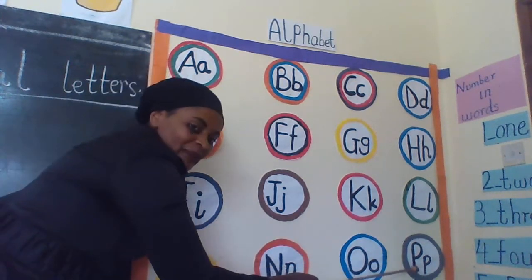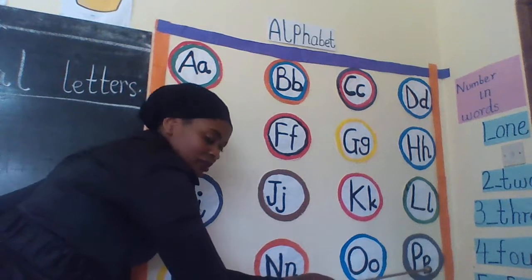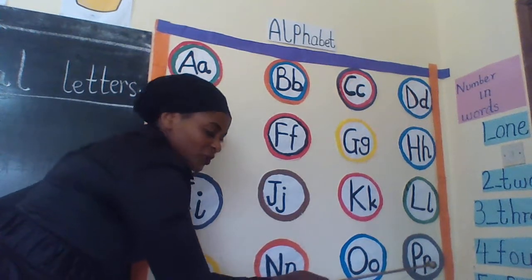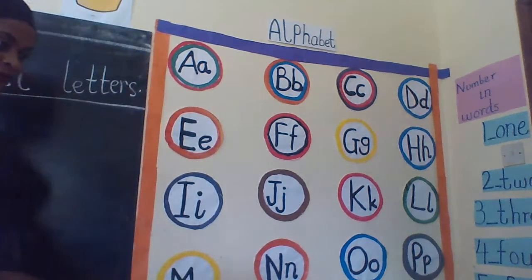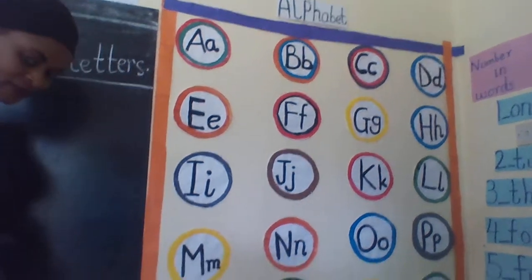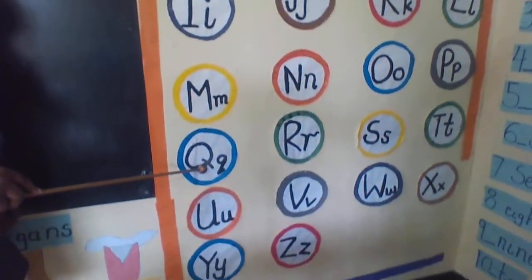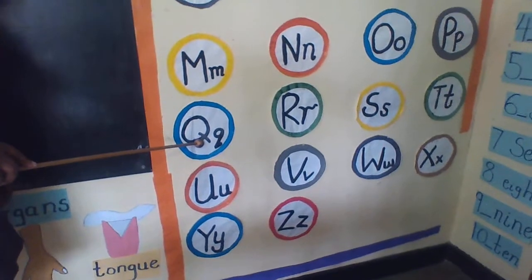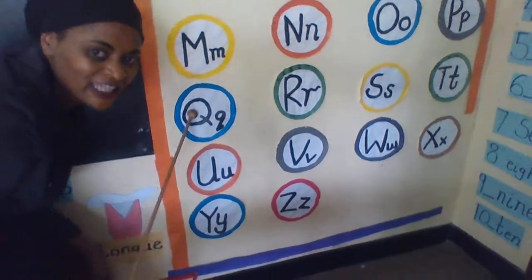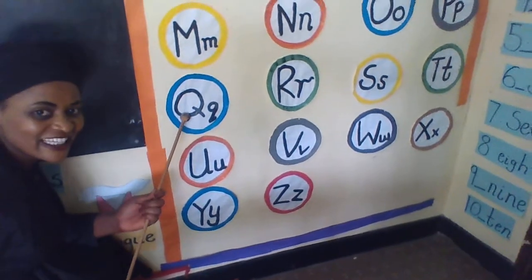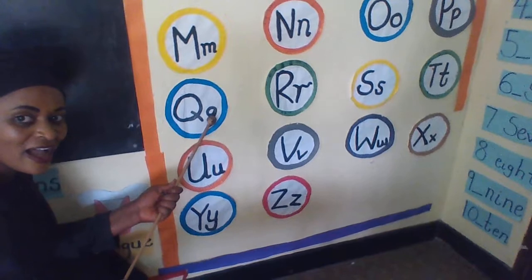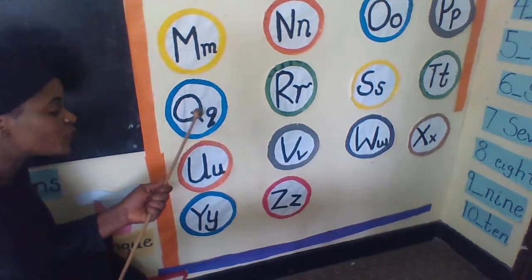Capital letter P, small letter P. Capital letter P, small letter P. Can you try to read this? Capital letter Q, small letter quad. Capital letter Q, small letter quad.